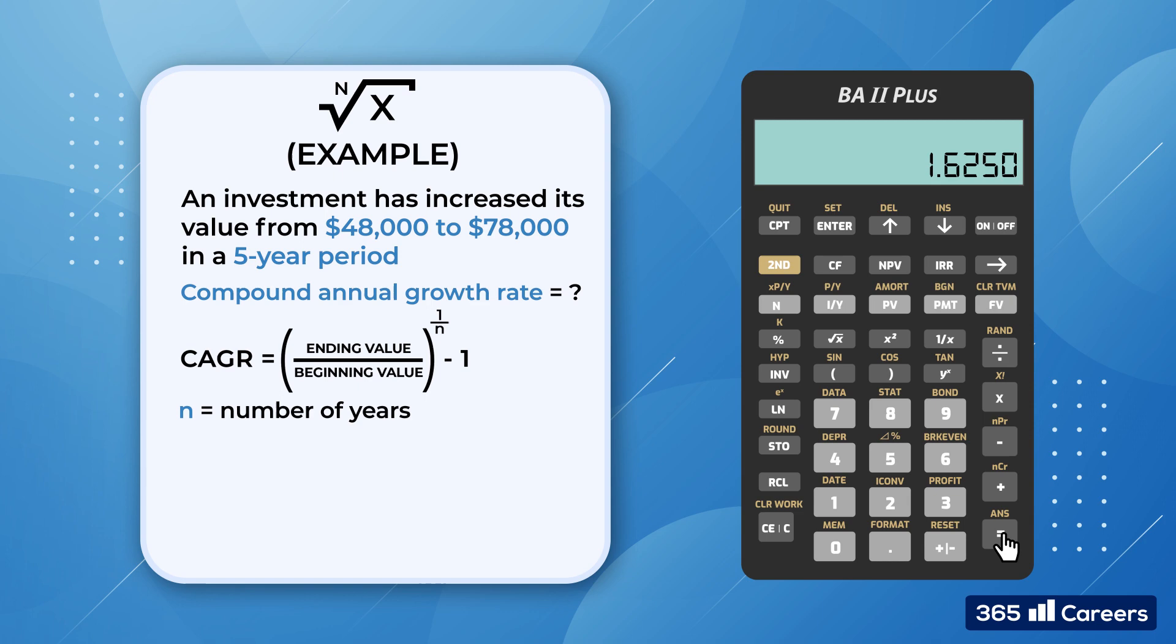What we can do instead is use the y to the power of x key. In this way, we could express the square root of x as x raised to the power of 0.5, the cubic square root as x raised to the power of 0.33, the fourth root as x to the power of 0.25, and so on. In our example, we need to obtain the fifth root, which is equivalent to raising a number to the power of 0.2, or 1 divided by 5. Then we subtract 1 to obtain the annual compound growth rate. As you can see, it is equal to 10.2% in this case.